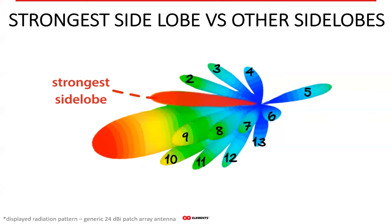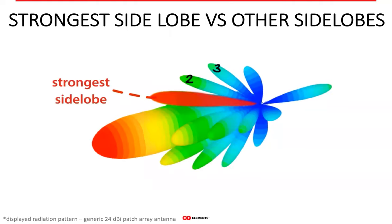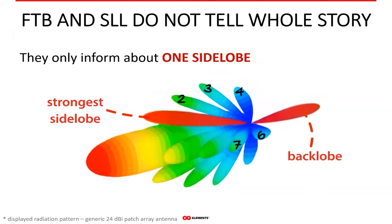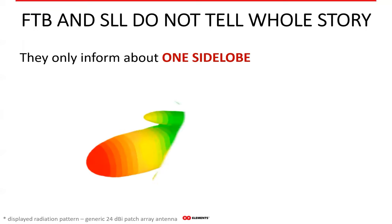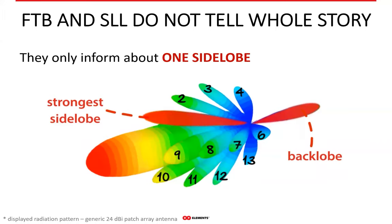Since side lobes change with frequency, the noise level also changes with them. So despite knowing the strongest side lobe at a single frequency, it is not very useful in the bigger picture, since simply switching channels changes everything. Side lobe level tells you what the strongest side lobe is at one frequency, but nothing about the rest of the side lobes throughout the useful spectrum of an antenna. In WISP networks, all side lobes matter — not just one, and not just at one single frequency.